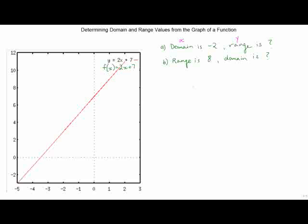So if our domain is negative 2, we go to our x-axis and start at negative 2. What we want to do is draw a vertical line to the graph. And then where it intercepts the graph, we draw a horizontal line to figure out our range.